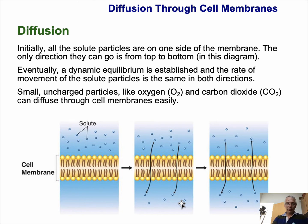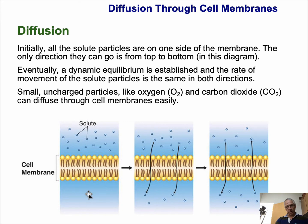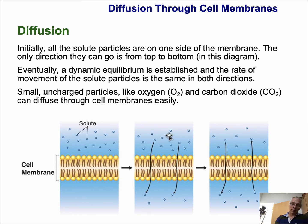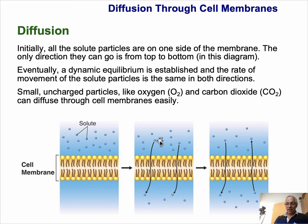Looking at diffusion across the cell membrane: if we have a lipid bilayer with water on both sides, and on the upper side there are many solute molecules but none on the other side, initially the only direction solutes can move — if they can cross the bilayer — is from top to bottom. But after a short time, enough particles accumulate on the bottom side, and some move back up. Overall, however, more are moving down, so the net effect is movement from higher to lower concentration.